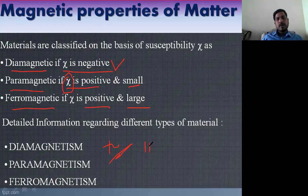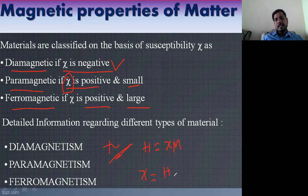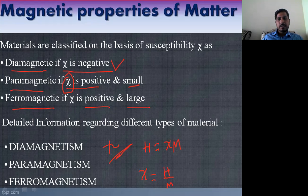Susceptibility chi is defined as the ratio of magnetization M to magnetic intensity H. So chi = M/H. From school standard, we know there are three types of magnetic material: diamagnetic, paramagnetic, and ferromagnetic material.